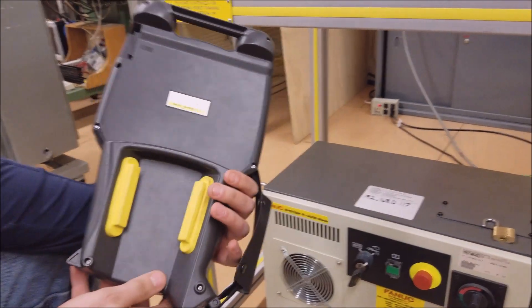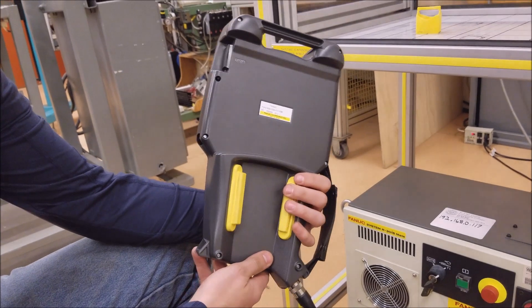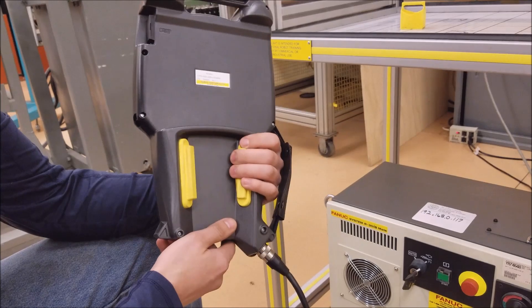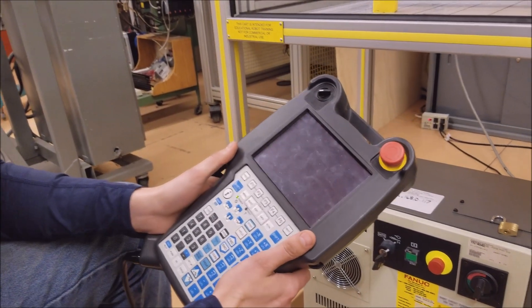On the back of this controller we have what are called the deadmans, and it's to make sure that the robot didn't hit you and kill you, so that you're actually still holding on to the controller while you're using it in manual mode.